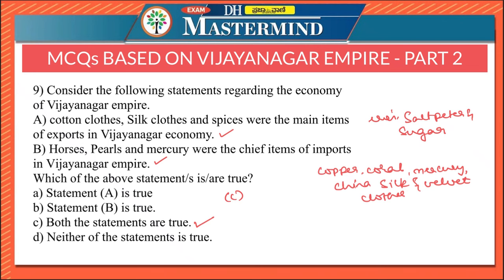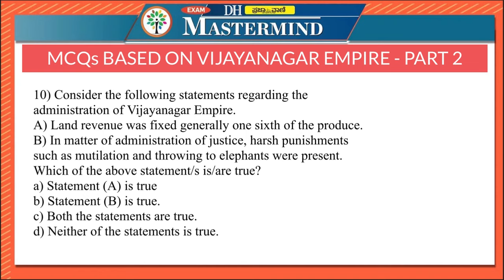The last question considers the administration of Vijayanagara Empire. Statement A says land revenue was fixed generally at one-sixth of the produce; Statement B says in the matter of justice, harsh punishments such as mutilation and throwing to elephants were present. Both statements are correct — Option C. Government expenditure included personal expenses of the king, charity, and military expenditure. Harsh punishments like mutilation and throwing to elephants were indeed followed during Vijayanagara times. Please go through the video and note down these important points, which will be handy even for descriptive answers.